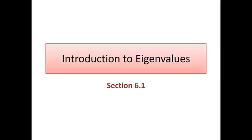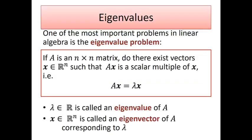Hi everyone. This serves as our second video in our introduction to eigenvalues. Recall that we're trying to solve what's called the eigenvalue problem: given an n by n matrix A, we want to determine whether there exist vectors x in R^n such that Ax equals lambda x. Lambda is called the eigenvalue of A and the vector x is called the eigenvector of A corresponding to lambda.